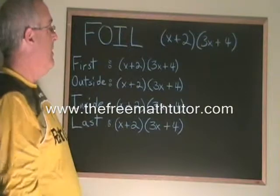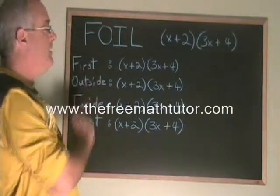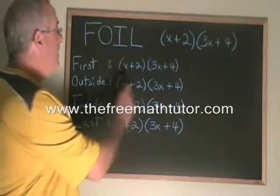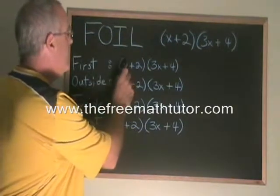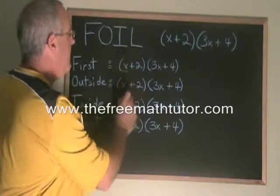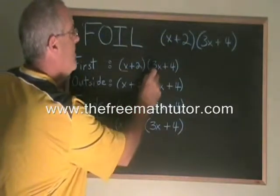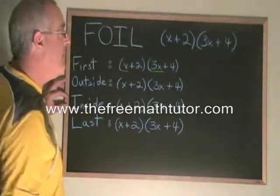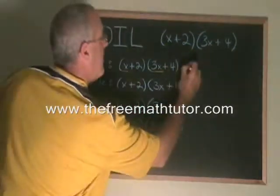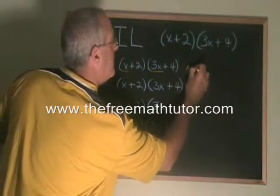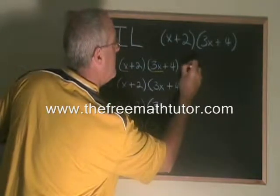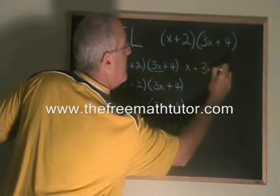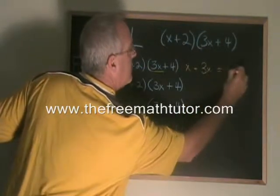The first thing to do is multiply the first terms in each binomial. The first term here is x, and the first term here is 3x. x times 3x equals 3x squared.